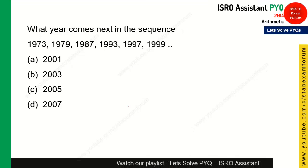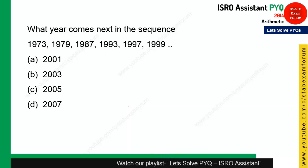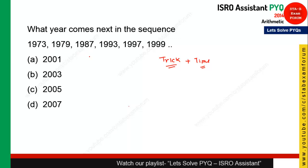Let's begin this session — your time starts now. This first question is a very tricky one; it can eat a lot of time, so be aware. If you see all these numbers, one similarity is that all of them are prime numbers, and prime numbers are very difficult to identify. Out of the four options, only option B is a prime number, so option B is the right answer.